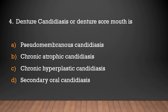Denture candidiasis, or denture stomatitis, is a form of chronic atrophic candidiasis. Other classified forms include pseudomembranous candidiasis, chronic hyperplastic candidiasis, and secondary oral candidiasis.